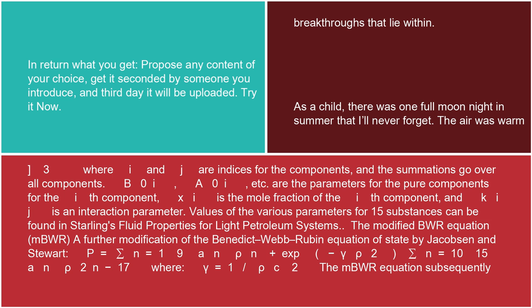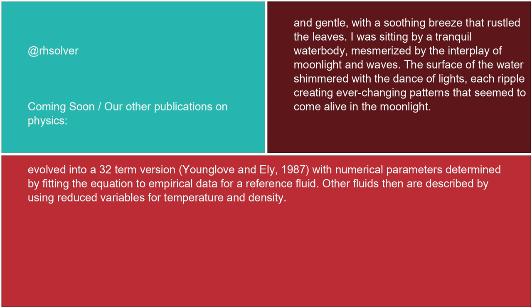The Modified BWR Equation (MBWR) is a further modification of the Benedict-Webb-Rubin equation of state by Jacobson and Stewart: P equals the sum from n equals 1 to 9 of an·rho^n, plus exp(minus gamma·rho²) times the sum from n equals 10 to 15 of an·rho^(2n minus 17), where gamma equals 1 divided by rho_c². The MBWR equation subsequently evolved into a 32-term version (Younglove and Ely, 1987), with numerical parameters determined by fitting the equation to empirical data for a reference fluid.